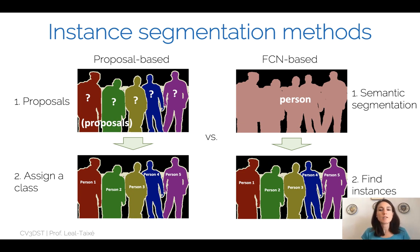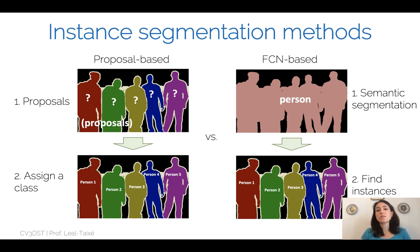We can approach instance segmentation in two ways. The first way uses knowledge from object detection, starting with a series of proposals. We start with object proposals and in a second step assign a semantic class to each proposal — the first step handles instance separation and the second step handles the semantic and segmentation parts. The other way is what I call the FCN-based method, which starts from the semantic segmentation map, and then separates instances inside the semantic label.